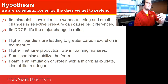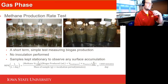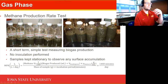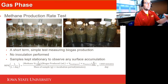Our hypotheses tried to tie into those phases — looking at gas production, more methane production, or small particles to stabilize the foam. One of the first things we did was a methane production rate test. In the two pictures here you can see some different manure that we sampled. This test was really supposed to be short-term and representative of just what's happening in the manure pit — not inoculating it or adding anything, just a sample brought back and put in bottles.